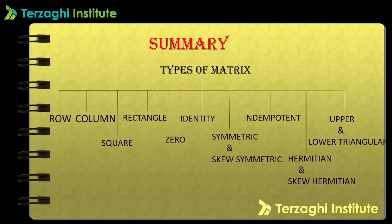To summarize the types of matrices: row matrix, column matrix, square, rectangle, zero, identity, symmetric, skew symmetric, Hermitian, skew Hermitian, idempotent, upper triangular, and lower triangular matrix. This is the summary flowchart of all the types.